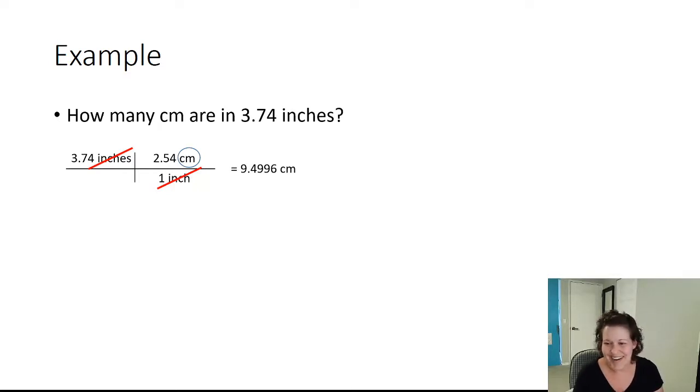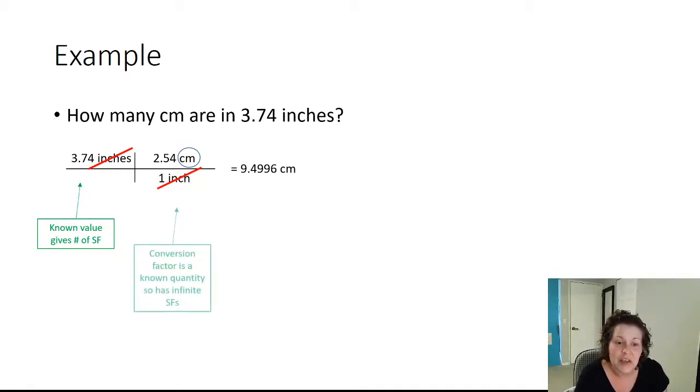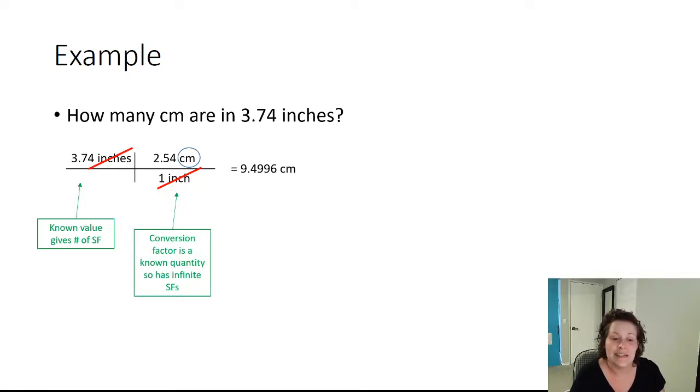Now here's where sig figs come back in, because everything that we're doing is building upon itself. So our known value gives us the number of sig figs that we need to include in our answer. And the reason why it's the known value and not our conversion factor is because the conversion factor is a known quantity, so it has infinite sig figs. Remember that rule that we talked about? Known quantities have infinite sig figs. Well, if 2.54 has infinite sig figs and one inch has infinite sig figs, then they aren't the fewest number of sig figs in the problem. They aren't going to limit our answer. It's going to come from that known value here.